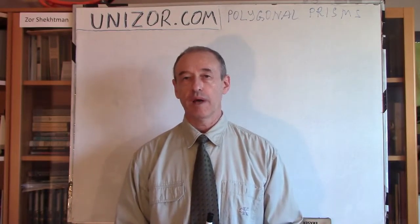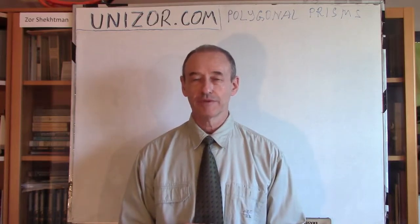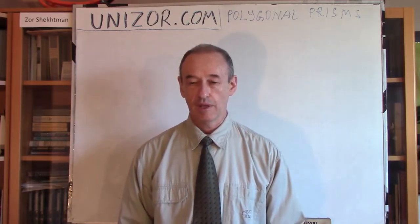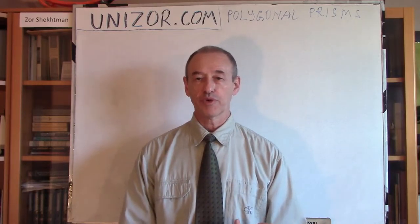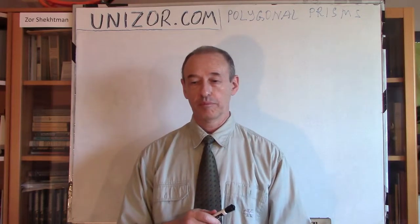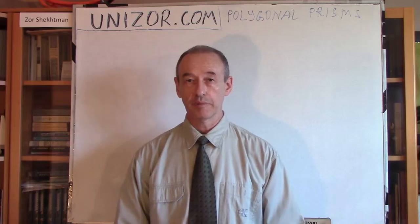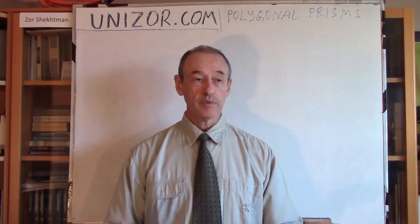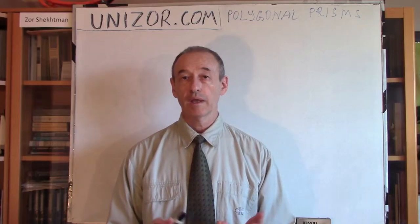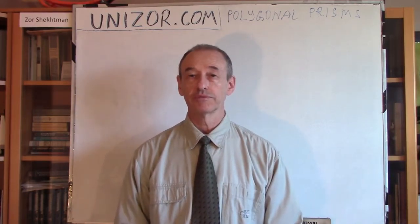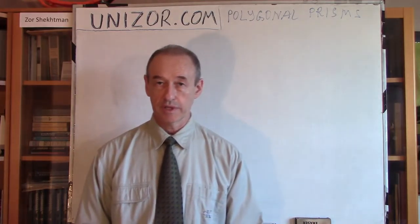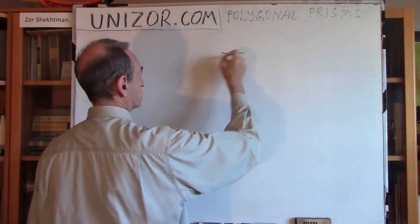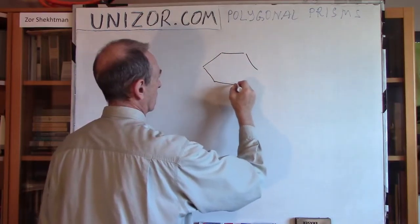I would like to expand our menu of different prisms towards a general prism. We were talking about prisms with a rectangle or parallelogram as a base — that was the parallelepiped. We were talking about triangular prisms with a triangle as a base. Obviously, we can talk about polygonal prisms when a polygon of different number of vertices is the directrix of this prism. For example, we can consider a hexagonal prism.